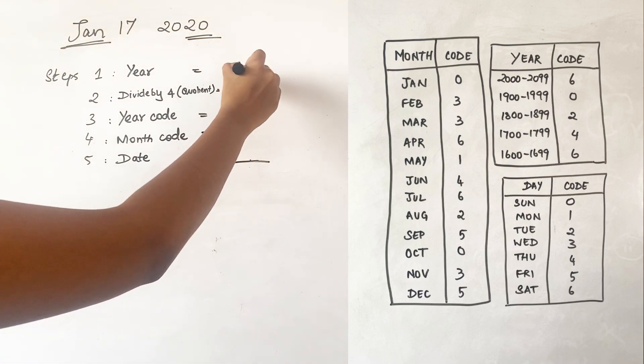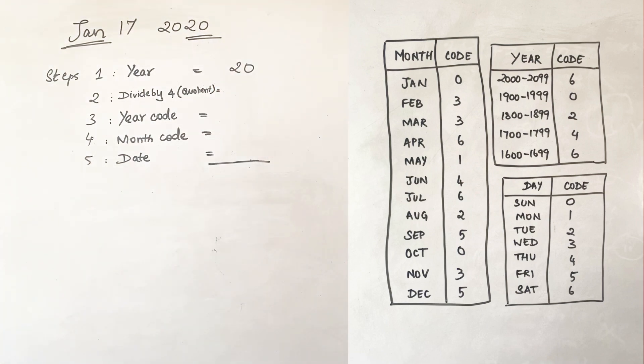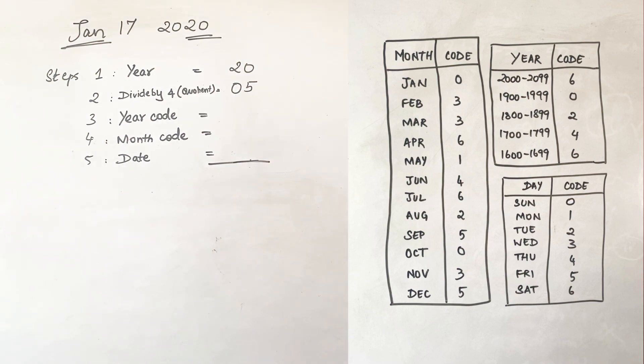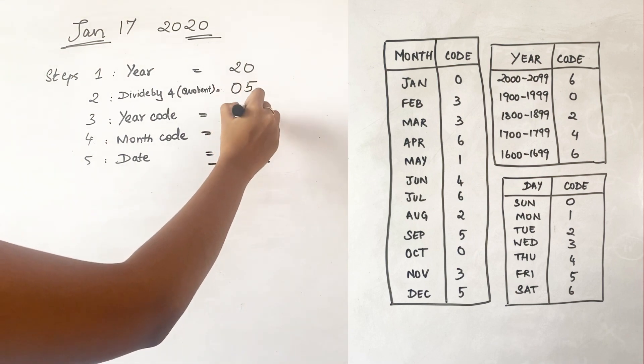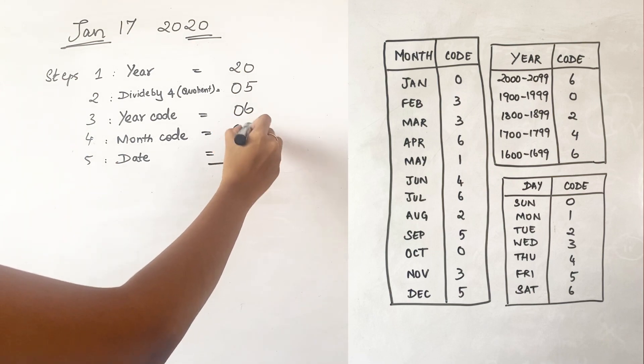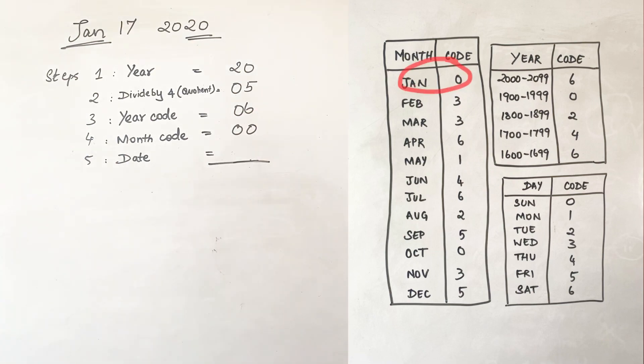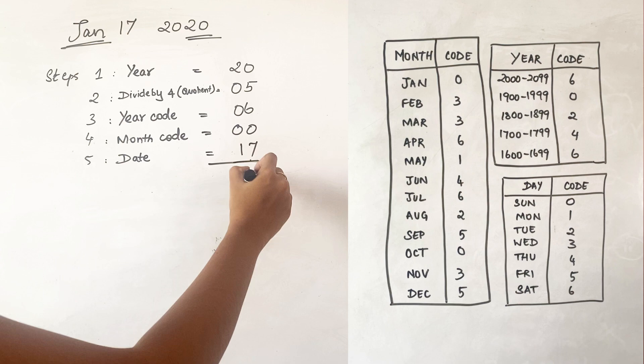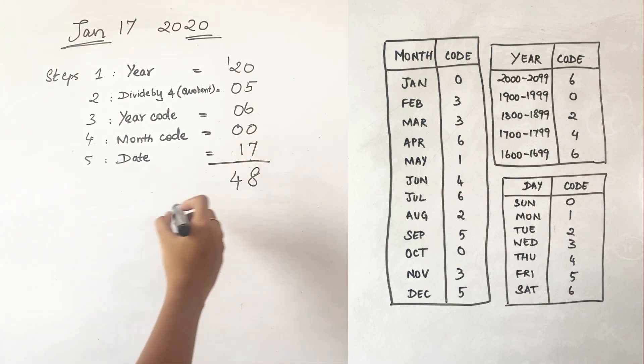Let's go ahead and solve this sum now. You see it's a leap year and it's in the month of January, so this follows the exception case. The first step, we're going to write the last two digits of the year. The second step, we are going to divide it by 4 and write the quotient. 20 by 4 is 5. The third step, we are going to write the year code. The year code here is 6. The fourth step is to write the month code. The code for January is 0. The fifth step is to write the date, which is 17. Let us add all these up. We are getting 48.